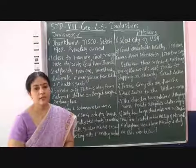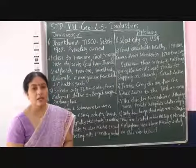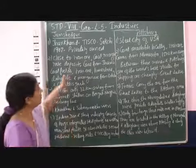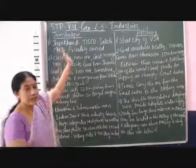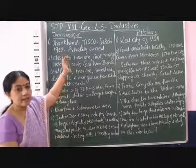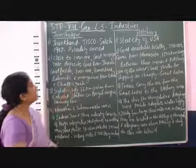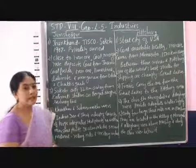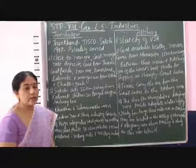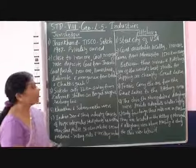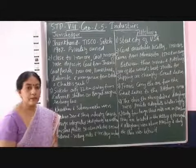The new name of Sakchi is Jamshedpur. Jamshedpur is an area in the Jharkhand state of India, and it is in this state that TISCO is located. It is a privately owned company.